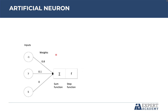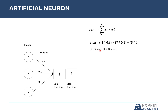Let's take a look at another example. Instead of 1, the value for the first input is minus 1. Applying the sum function: minus 1 times 0.8, plus 7 times 0.1, plus 5 times 0, which gives minus 0.8 plus 0.7 plus 0. The result of the sum function is minus 0.1. When we apply the step function, the output is 0, because minus 0.1 is not greater than or equal to 1.